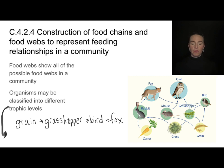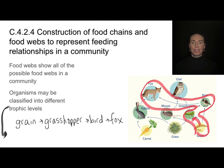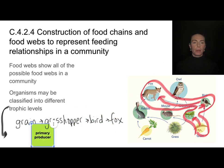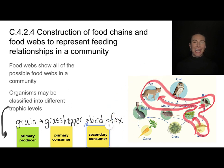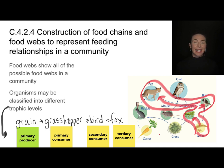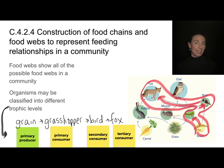Now let's consider this part of the food web: the grain to grasshopper to bird to fox route. In this case, the grain is the primary producer, the grasshopper is the primary consumer, the bird is the secondary or second level consumer, and the fox is the tertiary or third level consumer. So depending on what an organism is eating, that determines its trophic level. The fox can be either a secondary or a tertiary consumer depending on its food choice.